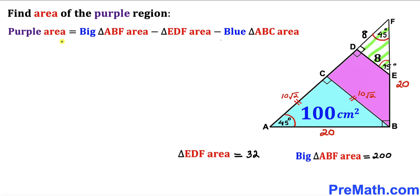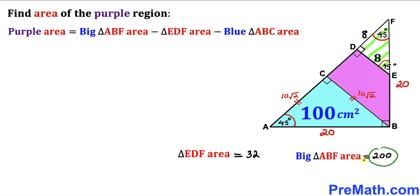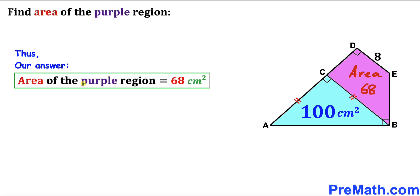For our final step, the area of the purple trapezoid equals the area of the bigger triangle ABF minus the area of triangle EDF minus the area of the blue triangle ABC. That gives us 200 minus 32 minus 100, which simplifies to 68 centimeter square. So the area of the purple trapezoid is 68 centimeter square. Thanks for watching and please don't forget to subscribe for more exciting videos.